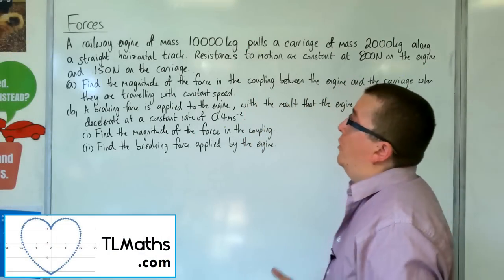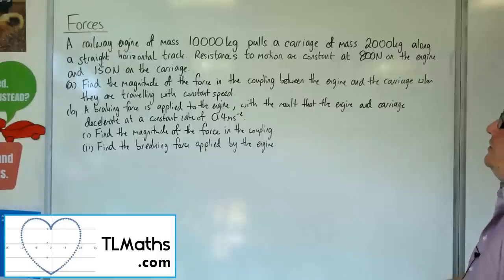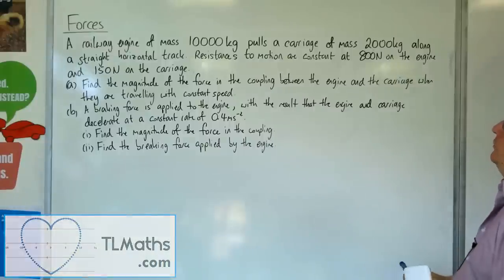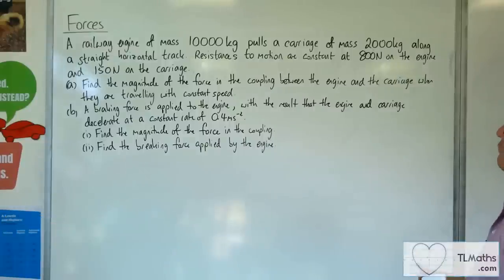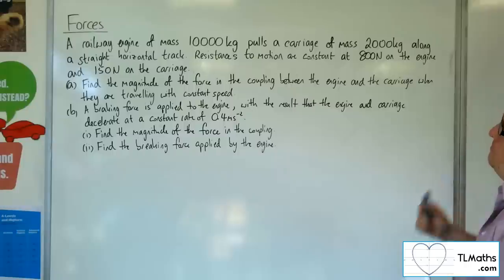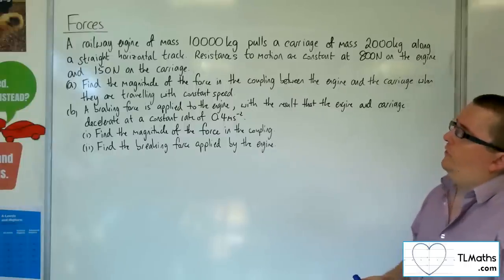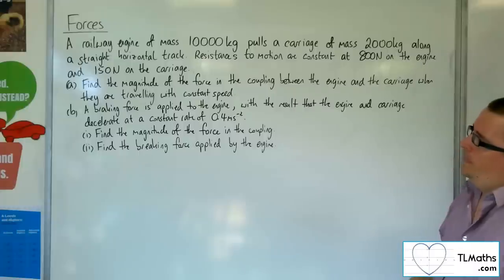In this video, a railway engine of mass 10,000 kilos pulls a carriage of mass 2,000 kilos along a straight horizontal track. Resistances to motion are constant at 800 newtons on the engine and 150 newtons on the carriage.